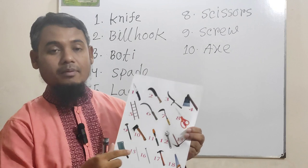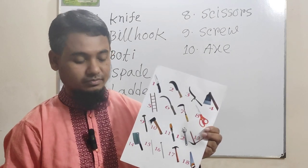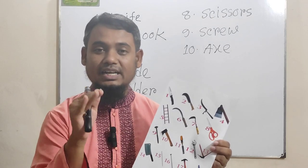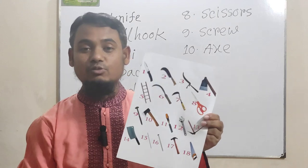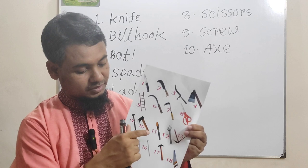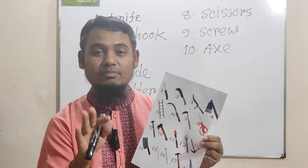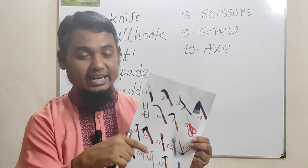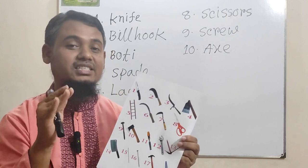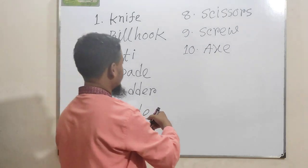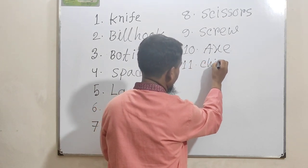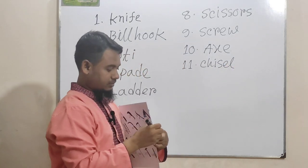Picture number eleven — this tool name is chisel. It is used by the carpenter and in some cases it is used by the mason to cut concrete. So this tool is used by both carpenter and mason. Picture number eleven is chisel.